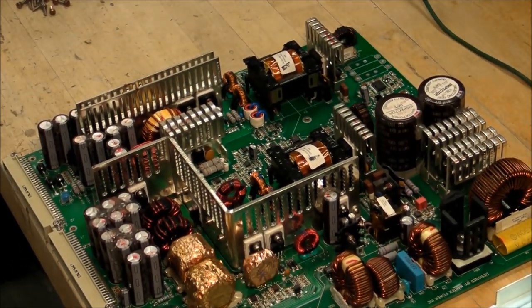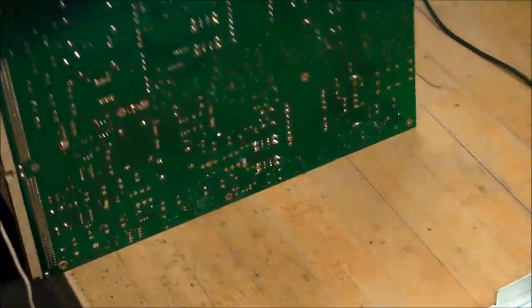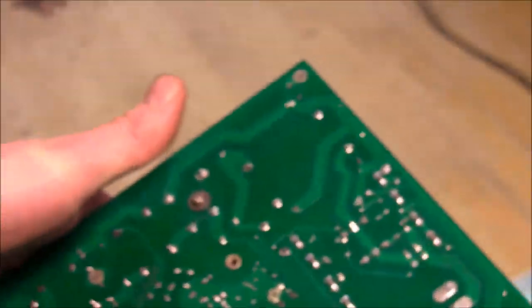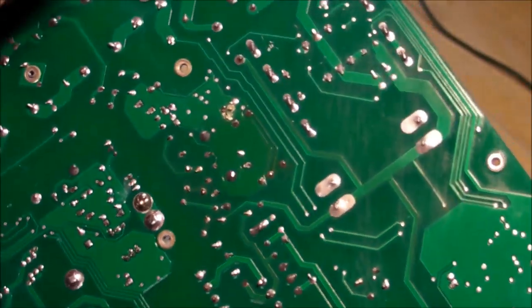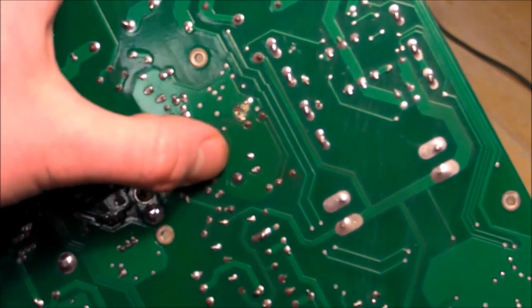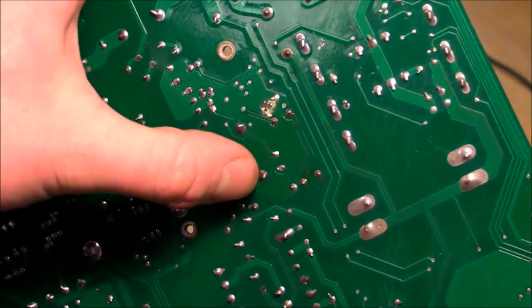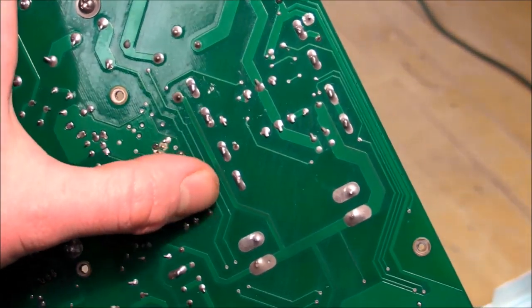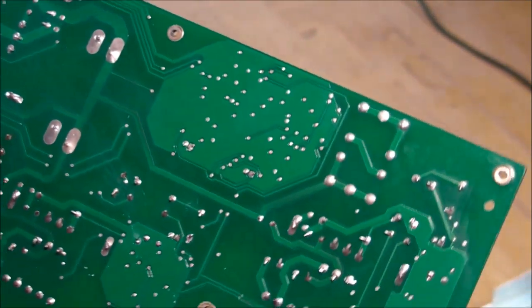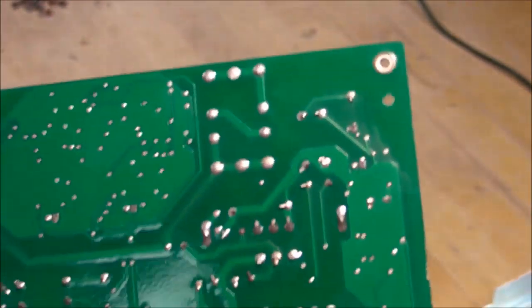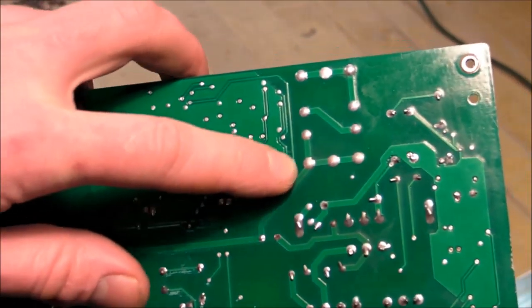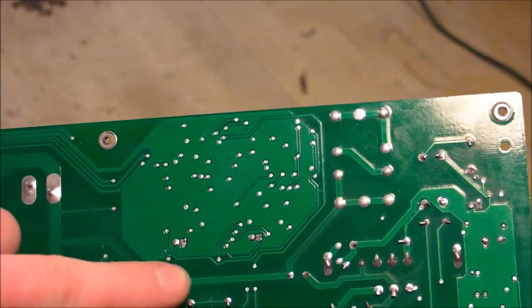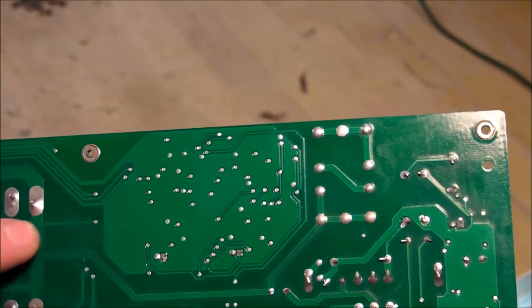But something very interesting I found on the bottom is how some of these traces have gotten discolored from heat. You can see how this pad right here is a darker color than that one, and there's some heat damage on this trace here. You can see how this is a little darker than the rest of the trace, and even got some darkening here.